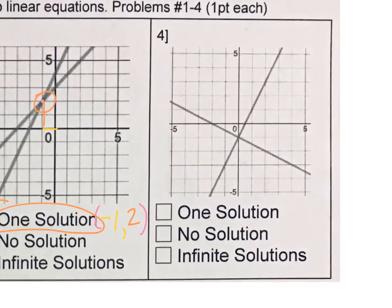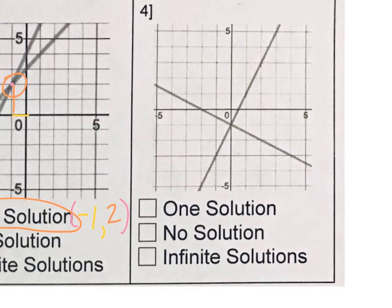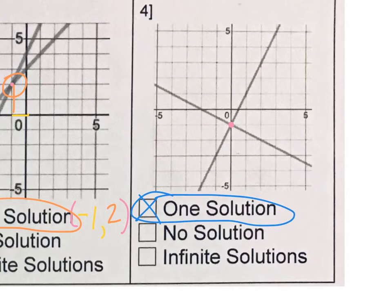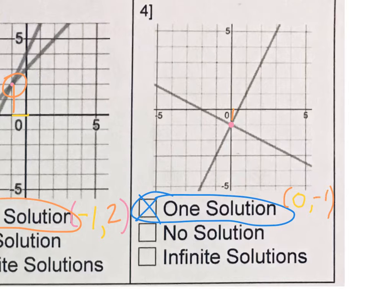We also have an X marks the spot on number 4, and that solution is right here. We know it is one solution because we get one specific answer — one point. For practice, let's write the ordered pair. On the X, it doesn't go anywhere, so that's 0. And then on the Y, it goes down 1. So 0, negative 1 is the ordered pair for that.